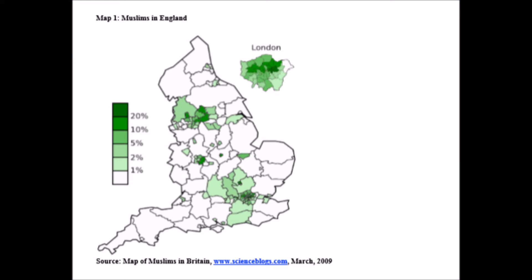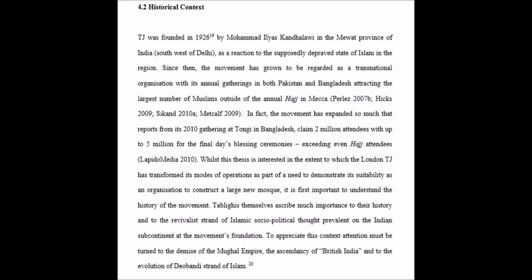The TJ was founded in 1926 by a man called Muhammad Ilyas Kandhlawi, in a place called Mewat province, in the southwest of Delhi. Kandhlawi viewed Islam in that region at the time as being in a depraved state — the word used by Piri — and he decided he had to do something to change this. He started organising transnational structures and annual gatherings in both Pakistan and Bangladesh. A recent gathering in Bangladesh, in a place called Tongi, claimed 2 million attendees in 2010.